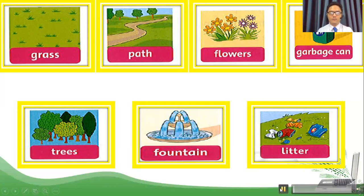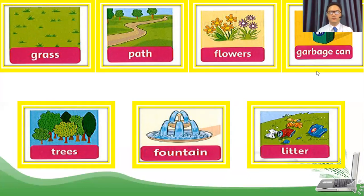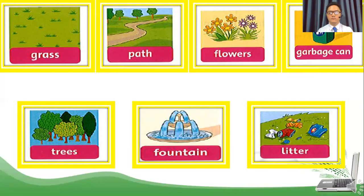Listening 89: Listen and point. Path. Grass. Flowers. Garbage can. Trees. Fountain. Litter. Flowers. Garbage can. Grass. Litter. Fountain. Trees. Path. Now: Listen and repeat. Path. Grass. Flowers. Garbage can. Garbage can. Trees. Fountain. Litter.